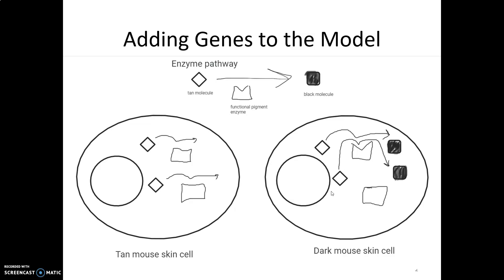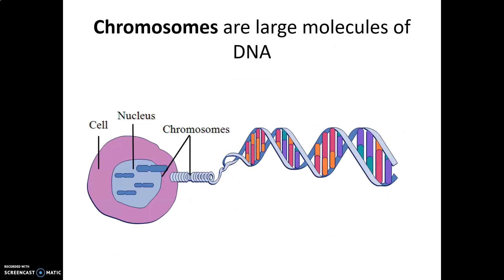We're going to look now at what's happening in the nucleus — we're going to be adding genes to the model. In understanding genes, we're going to have to understand the structure of DNA a little bit. First of all, chromosomes: when DNA gets coiled and wound up into these large molecules found inside of the nucleus of a cell, we call those chromosomes.